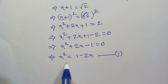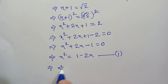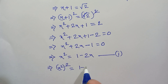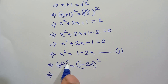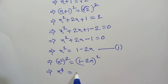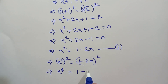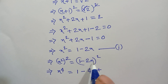Now in this equation we square both sides again: (x²)² = (1 - 2x)². Therefore x⁴ = 1 - 2·(1)·(2x) + (2x)², which gives x⁴ = 1 - 4x + 4x².